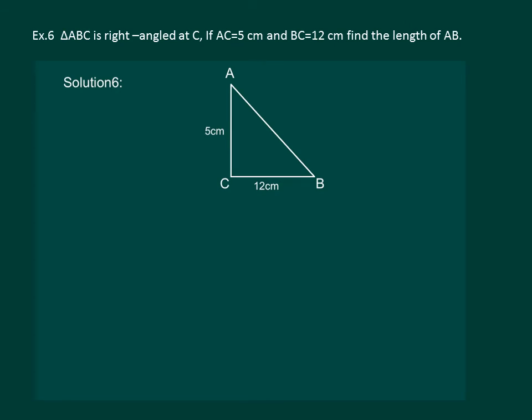Let us read the question. Triangle ABC is right-angled at C. If AC equal to 5 cm and BC equal to 12 cm, find the length of AB.